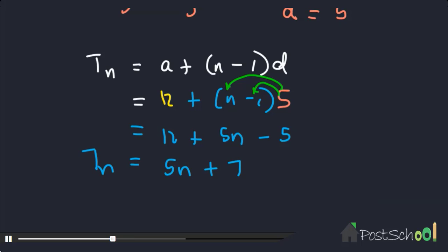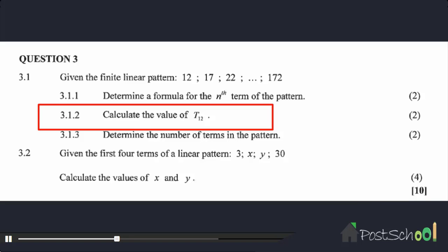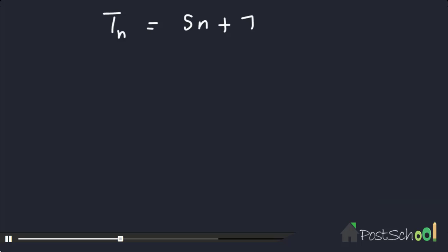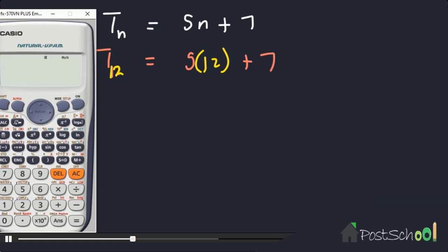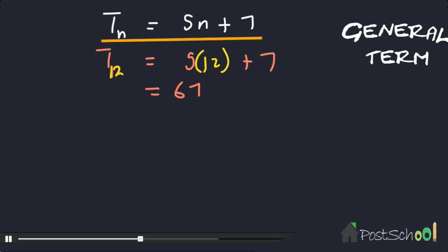The second question asks us to calculate t12. Now that we have the general term, we can calculate any term. t12 = 5(12) + 7, which gives us 60 + 7 = 67. Therefore t12 is equal to 67.